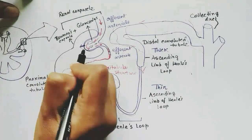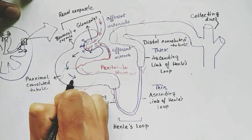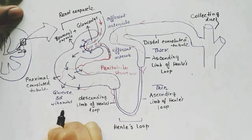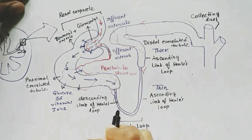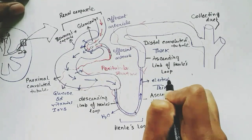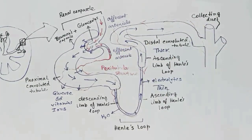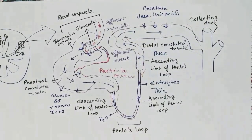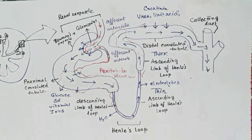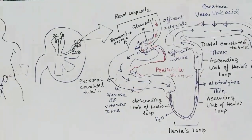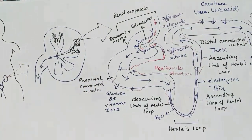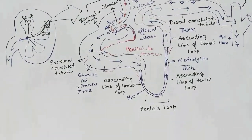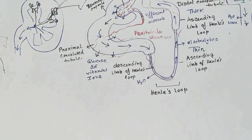After filtration of blood, the filtrate comes into the proximal convoluted tubule where substances like glucose, amino acids, vitamins, and ions are reabsorbed. Then it travels to Henle's loop where water and electrolytes are reabsorbed. In the distal convoluted tubule, toxic substances like urea, uric acid, and creatinine are secreted for excretion. It then connects to the collecting duct, which connects to the ureter, and exits the body as excreta.